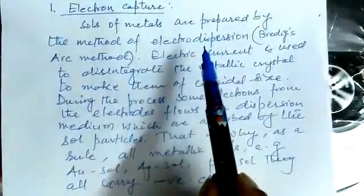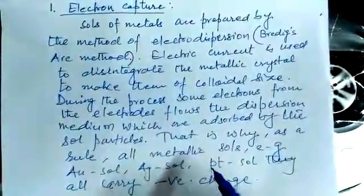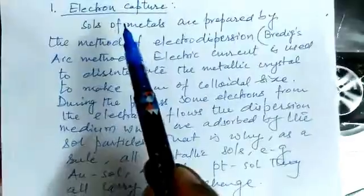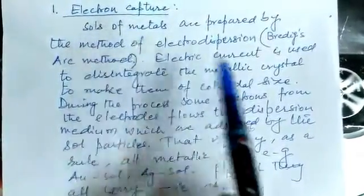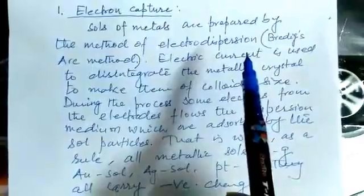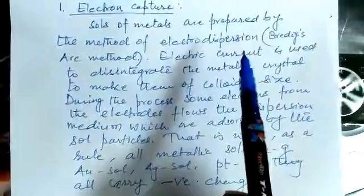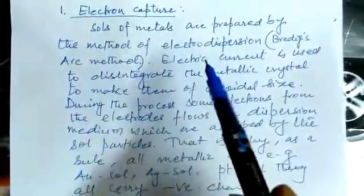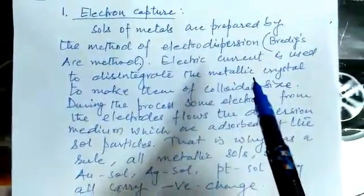Since we are using the method of electrodispersion and all the sols prepared by this method carry negative charge, it is itself a proof of electron capture. The origin of these electrons is, of course, the electric current used to disintegrate the metallic crystals. So electron capture is a major reason — most of the time, the negative charge on the sol particle is due to electron capture.